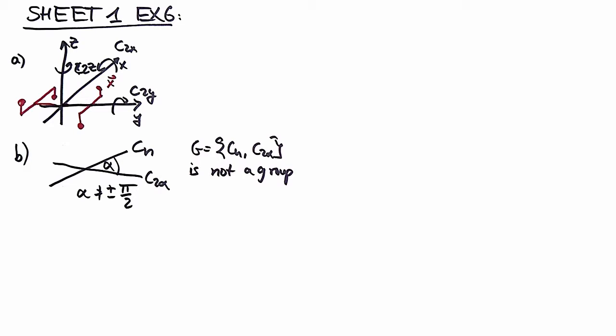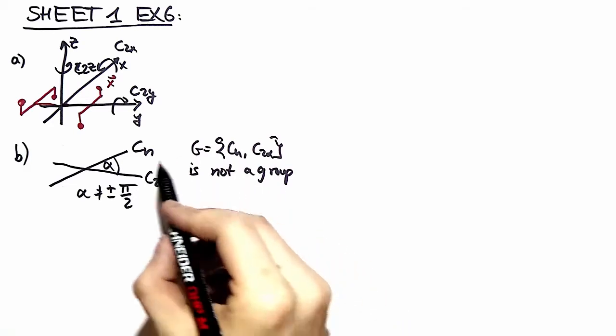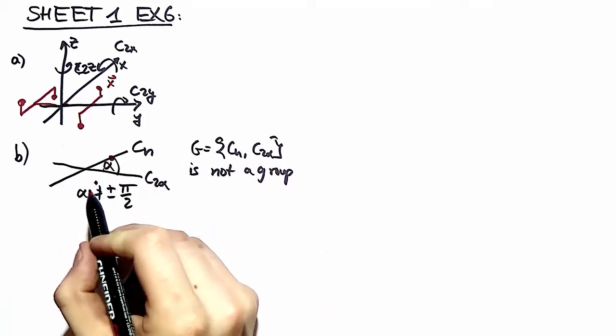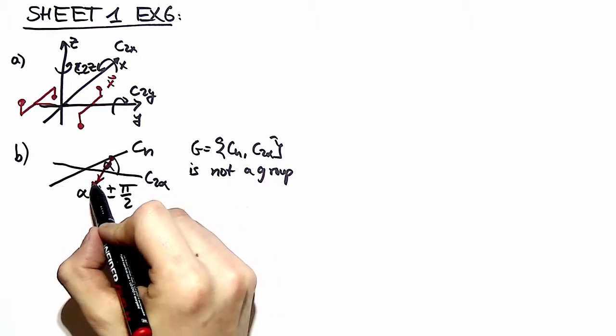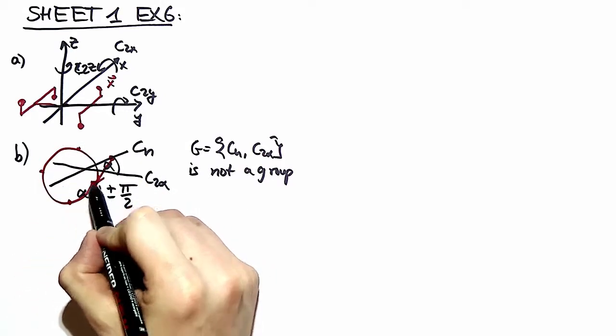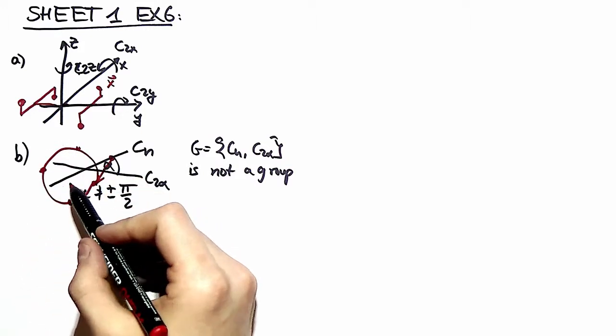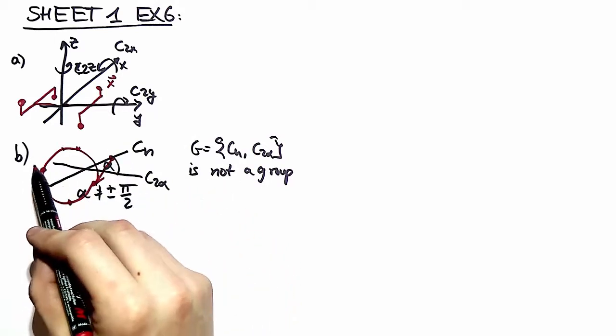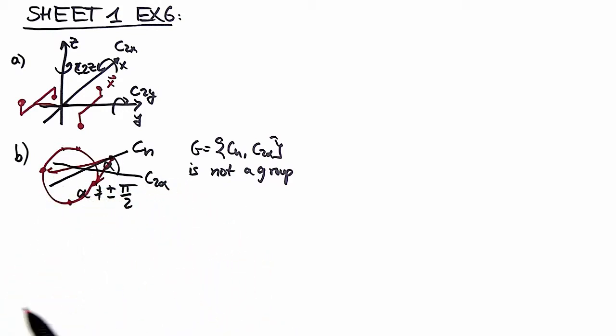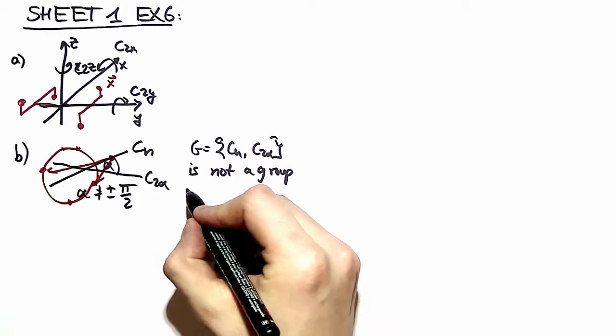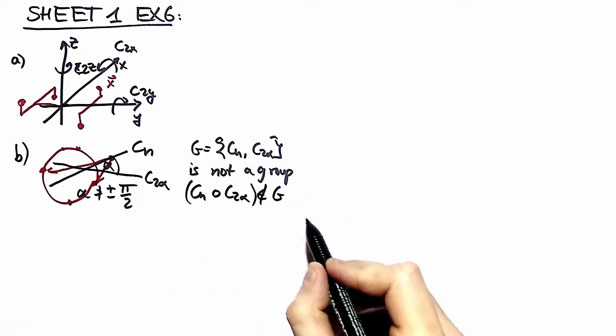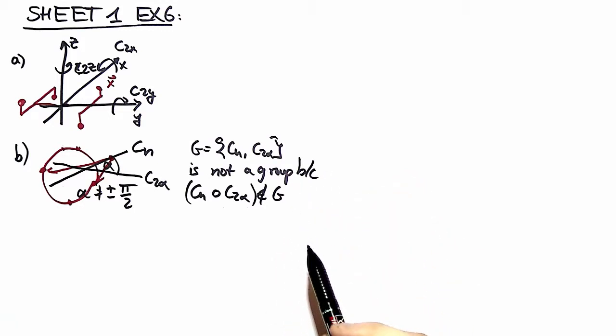It's easy to show because let's take the combination of both elements. We have one element on the Cn axis then we map it with the C2 alpha and we arrive over here, and then we map it again with Cn and we arrive somewhere around this circle. We can't reach this point without going the same way as before, meaning we have no element in this group mapping from here directly. This violates our group property, therefore G is not a group.